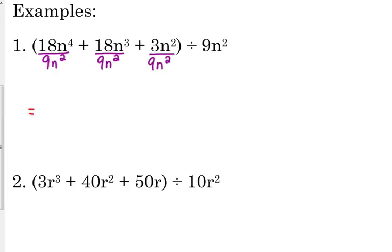So 18 divided by 9 is 2. n to the 4th divided by n squared, I subtract those exponents, top minus bottom, so n to the 4th over n squared is n squared. Bring down that plus, 18 divided by 9 is still 2, n cubed over n squared, 3 minus 2 is 1, so that's just n to the 1st.